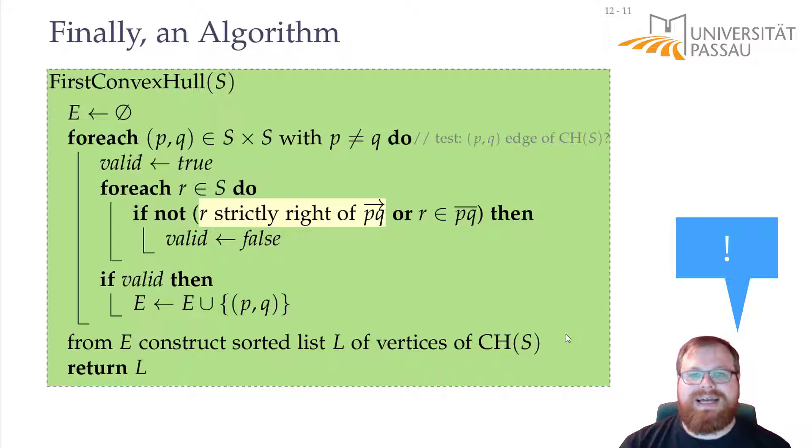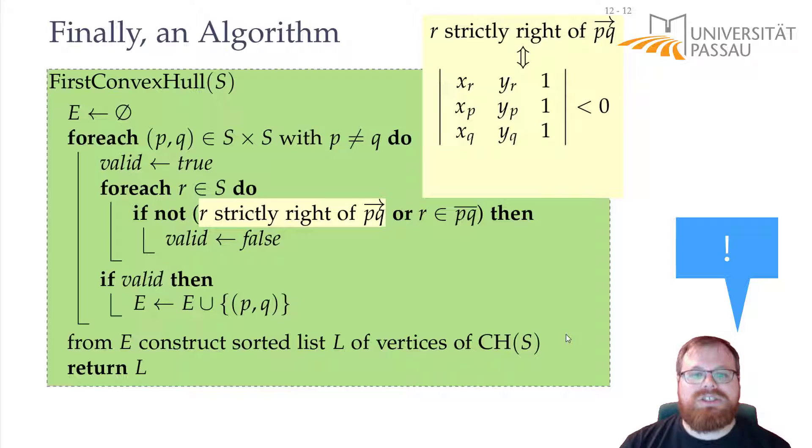Testing on which side of a directed line a point lies is basic linear algebra. We can simply determine the determinant of this matrix, where we have in the first row the coordinates of r, in the second the coordinates of p, and in the third the coordinates of q. And if the determinant of this is less than zero, then r lies strictly to the right of it. If it is exactly zero, then r lies exactly on the line. And this can be determined in constant time.